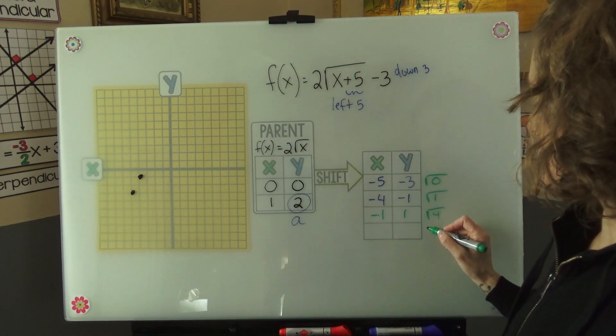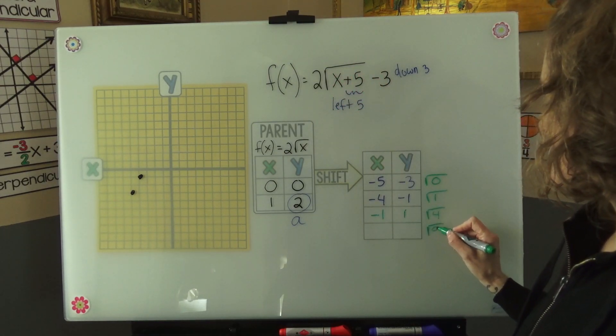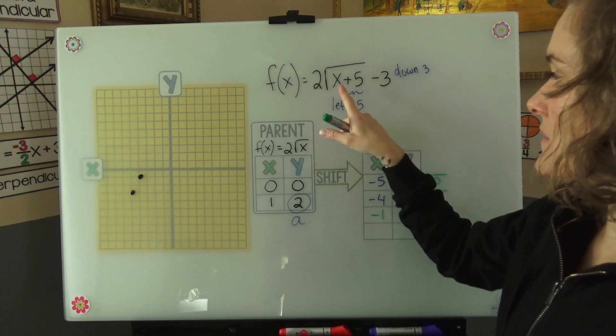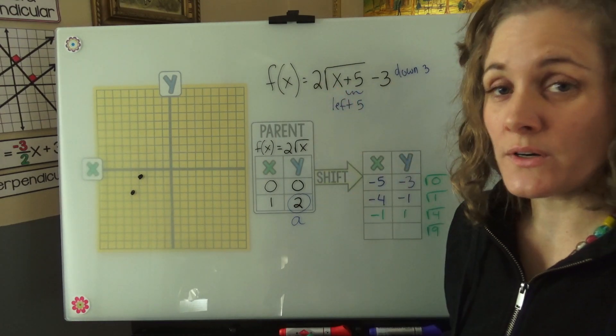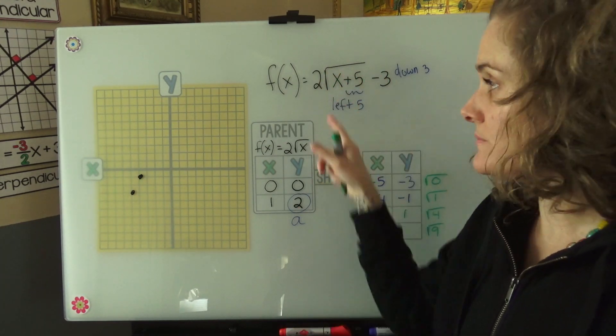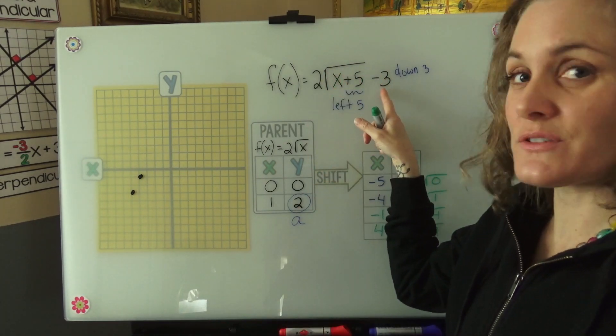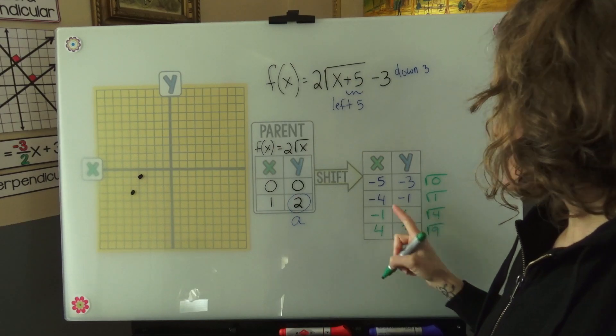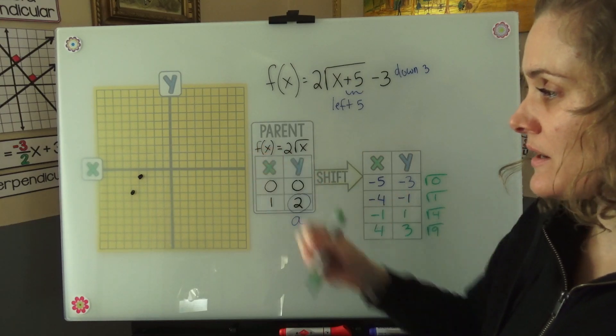Our next nice square number is 9. How do we get 9 out of here? Well, x would have to be 4. 4 plus 5 is 9. The square root of 9 is 3. 2 times 3 is 6. 6 minus 3 is 3. So here's two more points that we can then plot on our graph.